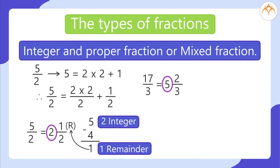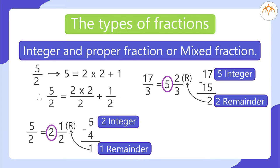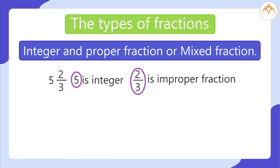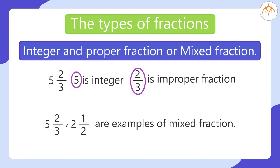17 divided by 3 equals 5 and 2 thirds: divide 3 into 17, the integer is 5, subtract 15, and the remainder is 2, giving 5 and 2 thirds. So 5 and 2 thirds and 2 and 1 half are examples of mixed fractions.